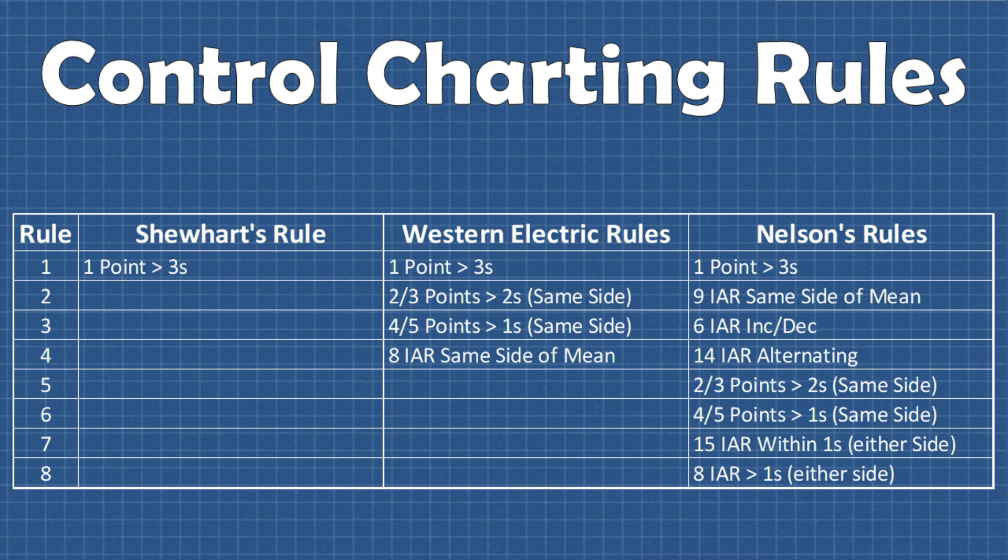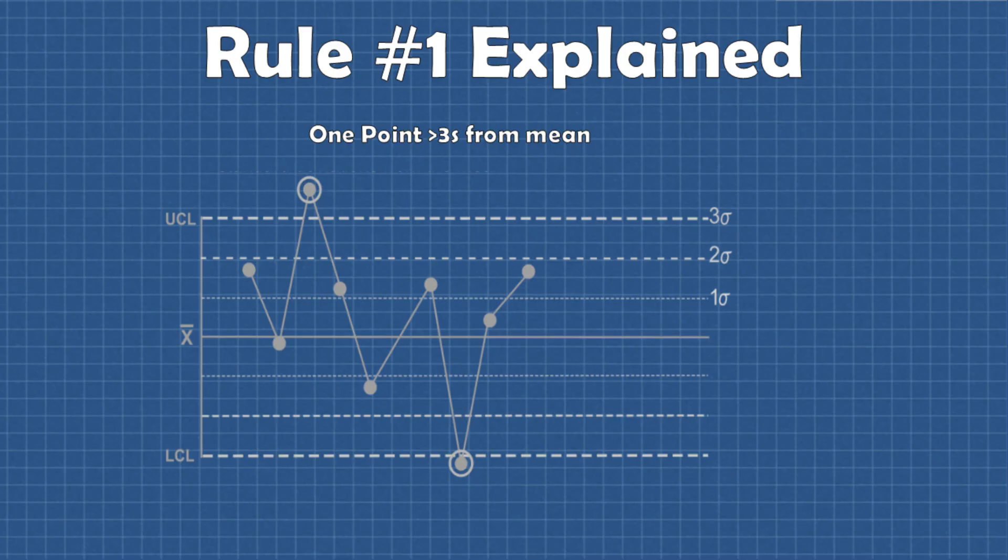And finally rule number eight is a test for a sequence of eight data points on both sides of the mean but none of the data points fall inside of one standard deviation of the mean on either side. For the rest of the video I'm going to be focusing on Nelson's eight rules and referencing the rules using his numbering system. So now we'll discuss each rule in depth so we can understand exactly what they can help us detect.